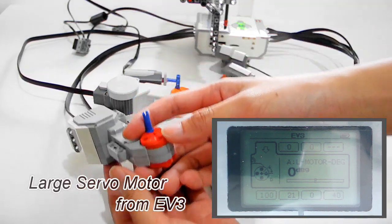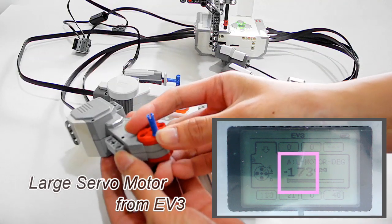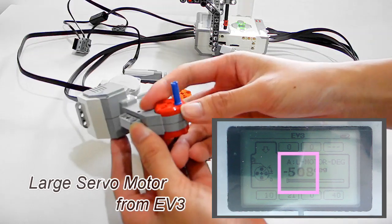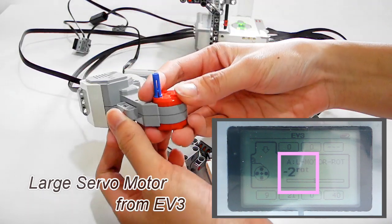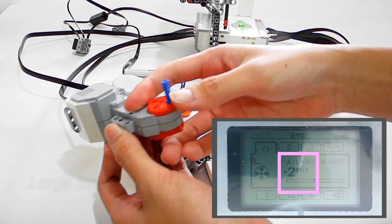This is the NXT Large Servo motor. You can see the degrees is moving, and when I change to the next mode, it shows how many rotations I have moved.